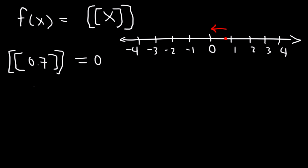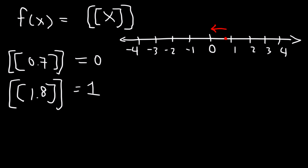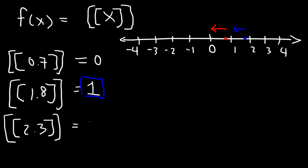What about the greatest integer of 1.8? That answer is 1. If we plot 1.8 on the number line, just pick the integer to the left, which gives you 1. And the greatest integer of 2.3 equals 2, because if you plot 2.3 and go to the left, the next integer is 2.